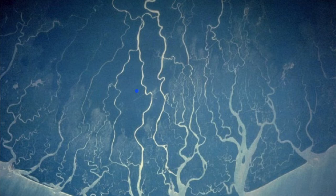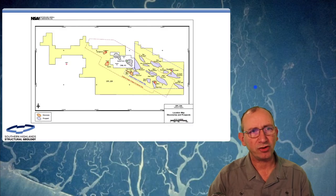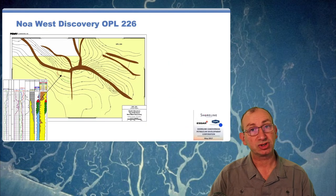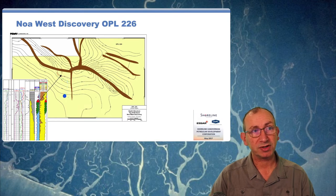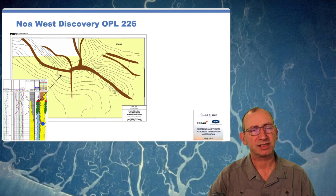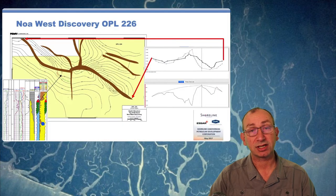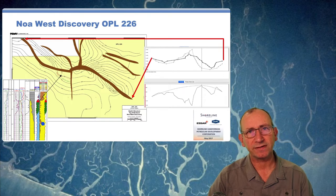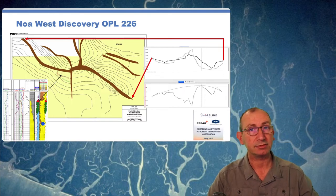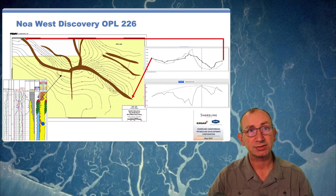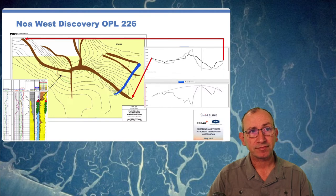Now to the Niger Delta. This is a really nice image that gives you an idea about what the delta looks like — a set of channels moving out radially. We're going to look at OML 226, which was the Noah discovery. To do a fault seal analysis we need a good depth structure contour map showing where the faults are with readable contours. This one is really good in that we have a simple scenario with a great big fat sand, so there's no complexity in the stratigraphic template, which allows us to make some really interesting inferences.